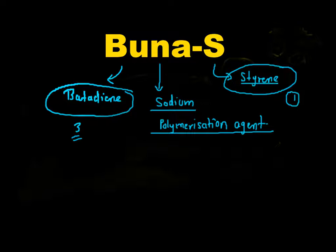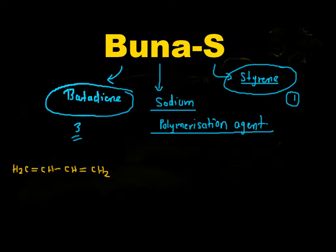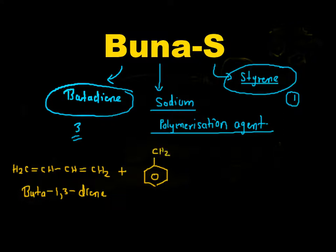Let's study the structure of Buna-S. First, I'll draw the structure of butadiene, whose IUPAC name is buta-1,3-diene, and it is treated with styrene (CH2=CH2), and it undergoes polymerization.